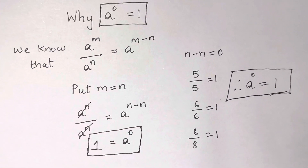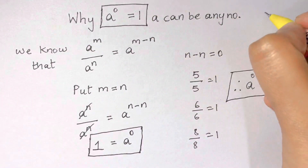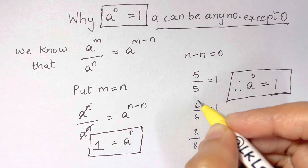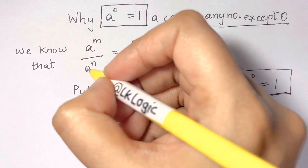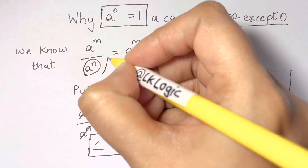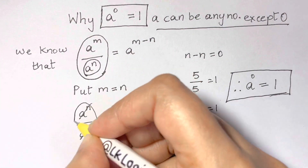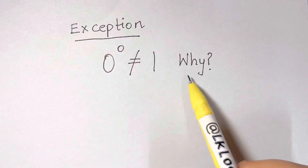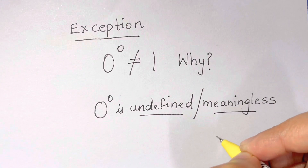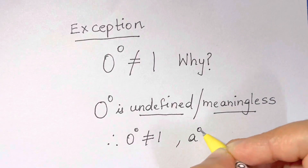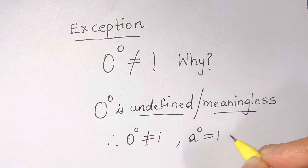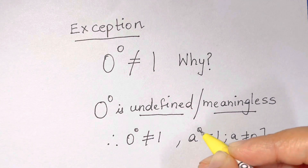Why is zero to the power of zero not equal to one? In our proof, a can be any number except zero. If a is zero, then the denominator — a to the power of n — becomes zero. When the denominator is zero, the fraction becomes undefined. So the left-hand side is undefined, meaning zero to the power of zero equals undefined, or is meaningless. So anything to the power of zero is one — two, three, pi to the power of zero — all equal one, but not zero to the power of zero.